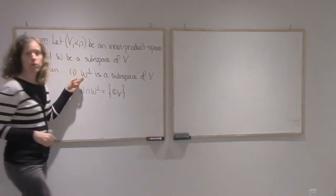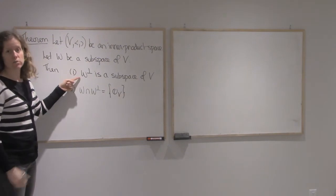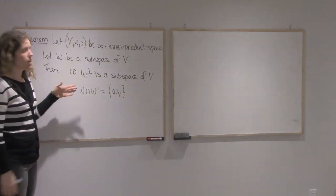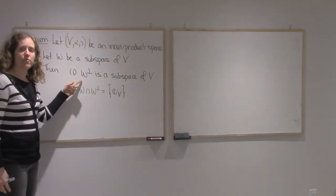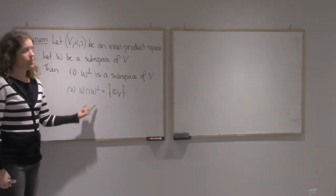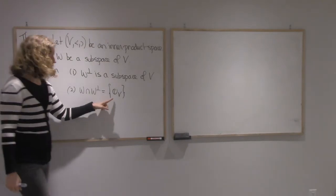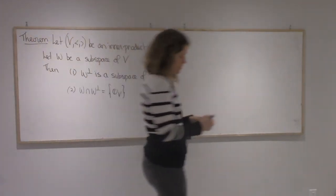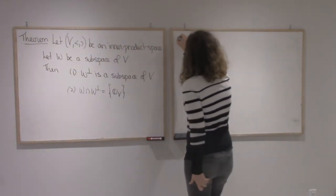We want to look at the orthogonal complement, that's the set of vectors that are perpendicular to everything in W. I claim that that forms another subspace of V, and have the only element that W and W-perp have in common as the zero of the vector space. So I'm going to prove this.